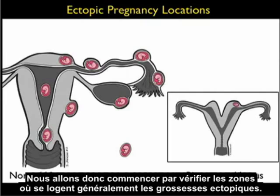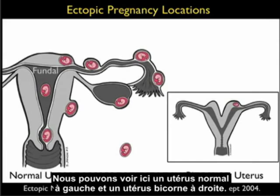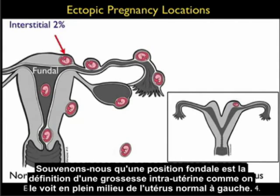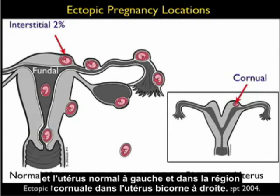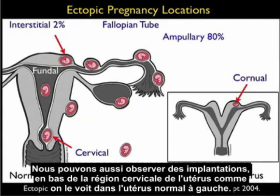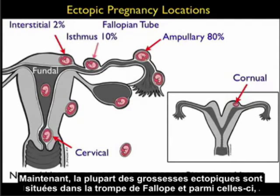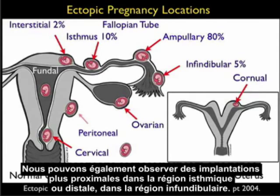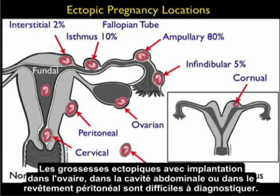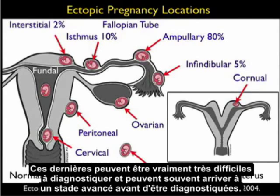Let's begin our discussion of ectopic pregnancies by reviewing the locations where they're commonly found. A fundal location defines an intrauterine pregnancy. However, we can have variants of ectopic pregnancies within the uterus — in the interstitial location in a normal uterus, and in the corneal region in a bicornuate uterus. We can also have implantations low within the cervical region. Most ectopic pregnancies will be located within the fallopian tube, and of those, the majority will be found in the ampullary region. But implantations can also occur more proximally in the isthmal region or distally in the infundibular region. Tough ectopics to diagnose are those that implant within the ovary, within the abdominal cavity, or within the peritoneal lining, and these can grow to an advanced stage before diagnosis.